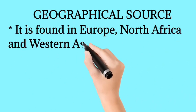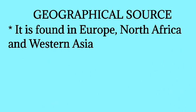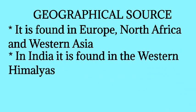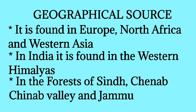Now we take geographical source. It is found in Europe, North Africa, and Western Asia. In India it is found in the Western Himalayas. The main habitat of belladonna is the forests of Sindh, Chenna Valley, and Jammu.